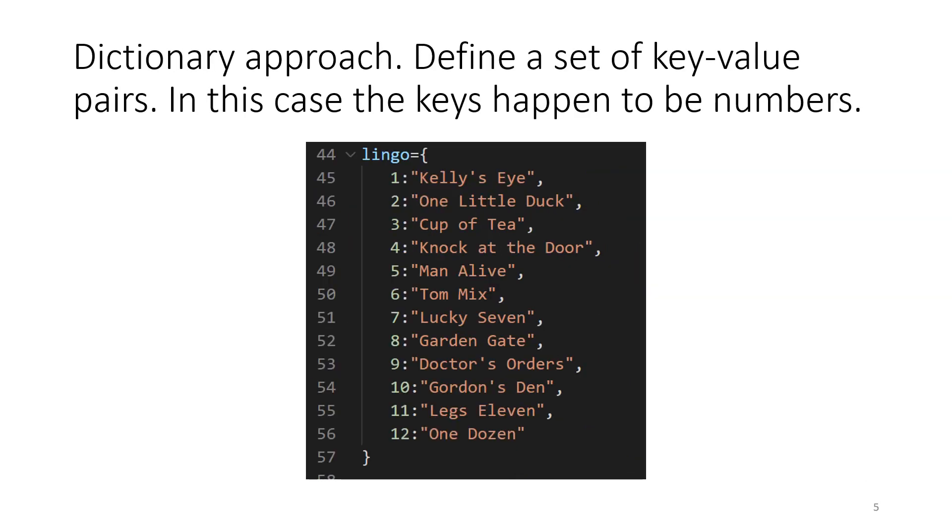Our second approach to bingo calling is going to be a dictionary approach. So we're going to have a set of what are called key-value pairs. Typically, one uses the key to look up the value. So in this case, in our bingo case, the keys will be numbers.